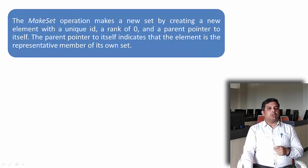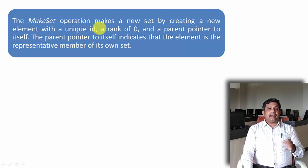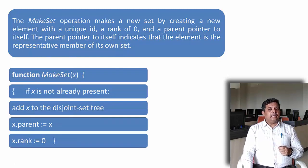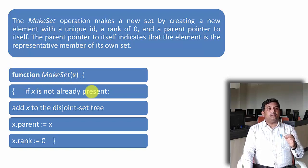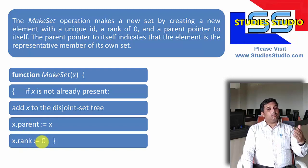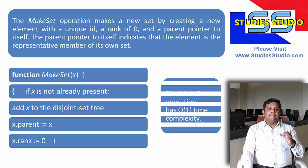Now let us see the algorithm. Make set creates a new set by creating a new element with a unique id, a rank of 0, and a parent pointer to itself. The parent pointer to itself indicates that the element is the representative of its own set. The algorithm: function make set of x — if x is not already present, add it to the disjoint set tree, set x's parent to itself, and assign x's rank to 0. Its complexity will be O(1).